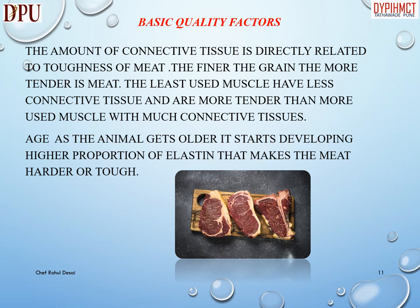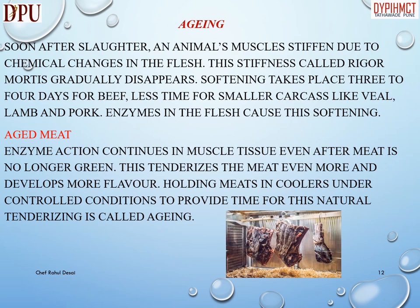The least-used muscles have less connective tissue and are more tender than more-used muscles with much connective tissue. As the animal gets older, it starts developing a higher proportion of elastin, which makes the meat harder or tougher.